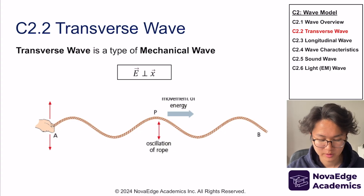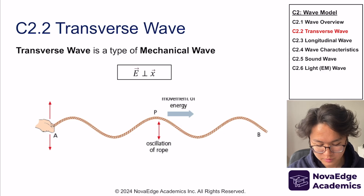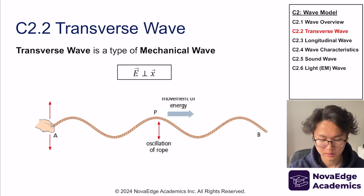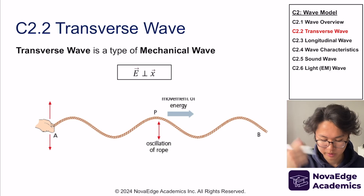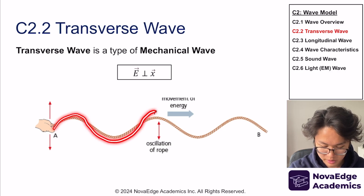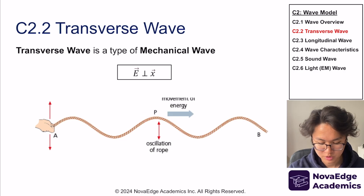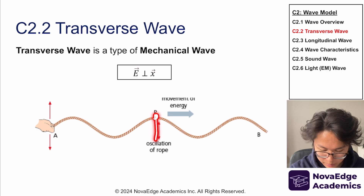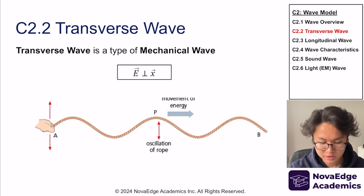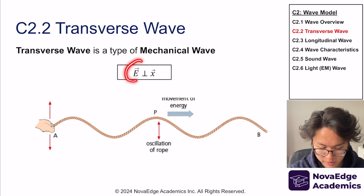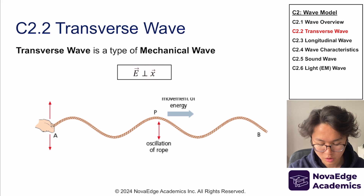The first type of wave is a transverse wave, which is a type of mechanical wave — mechanical wave being the broader category. A perfect example is the gym rope example, where you pull the rope up, down, up, down, creating a wave-like pattern. Each part of the rope oscillates up and down. The transverse wave definition is when the energy propagation is perpendicular to the oscillation or displacement. The displacement of the rope goes up and down, but the energy is propagated from point A to point B.